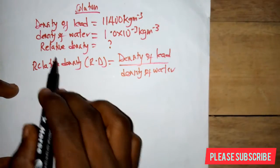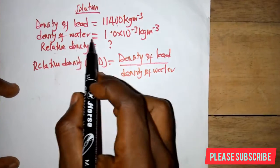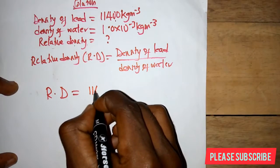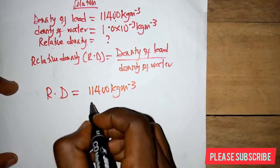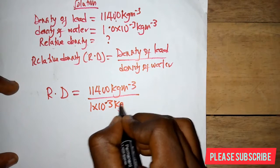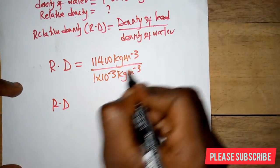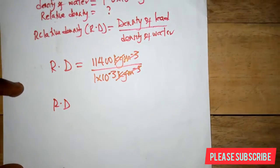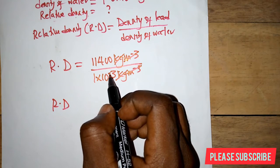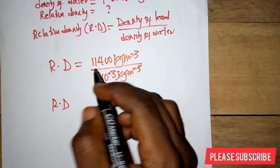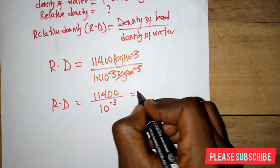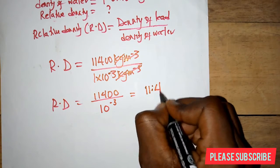We know the density of lead is 11,400 kilograms per meter cube and the density of water is 1 × 10³ kilograms per meter cube. The kilograms per meter cube units cancel out, and we have 11,400 divided by 10³, which gives us 11.4.